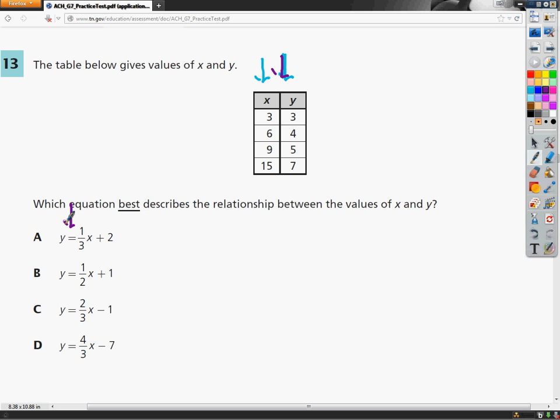If I can find a situation where if I plug in stuff from the x and I get the matching y, I'm in good shape. Really, when I plug in 3, I should get 3 as my answer for y. When I plug in 6 for x, I should get 4. When I plug in 9, I should get 5 because they're supposed to match.